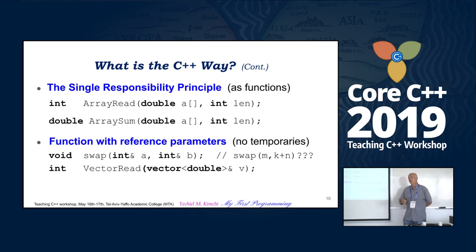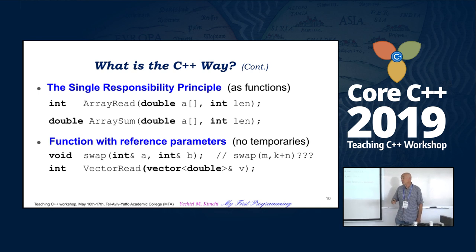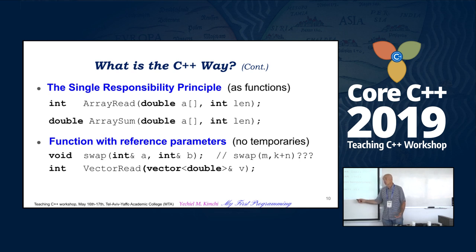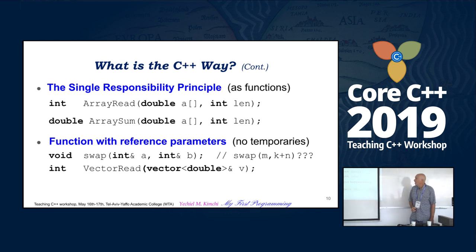At the point where C would use pointers, I used references — for swap, of course. If I had STL I would have used that. Using pointers for swap is a side effect of C. So we use references before pointers.